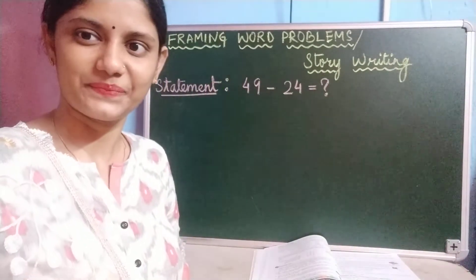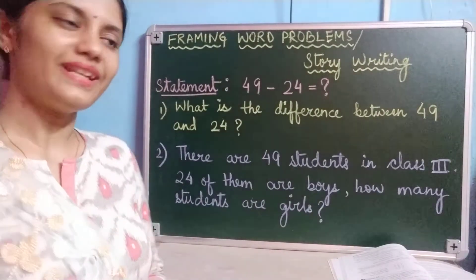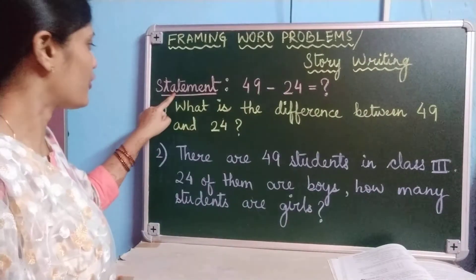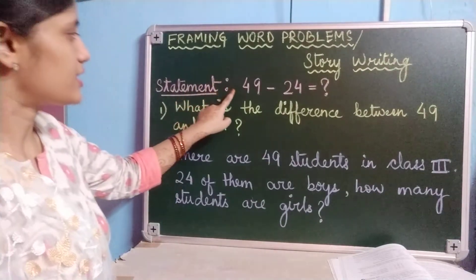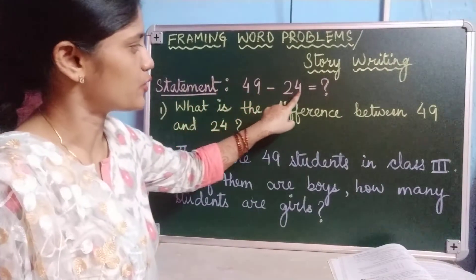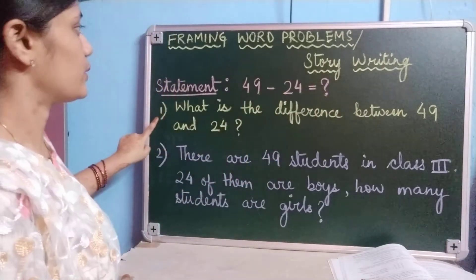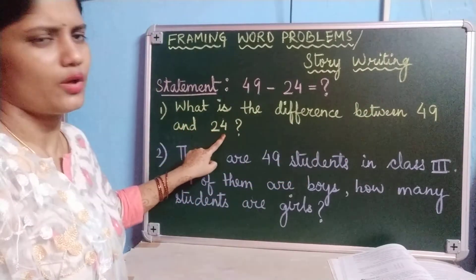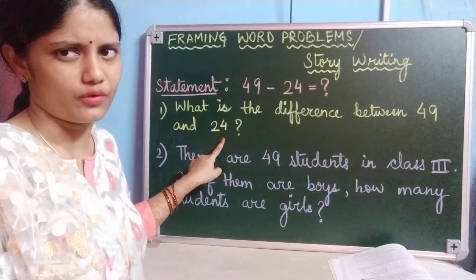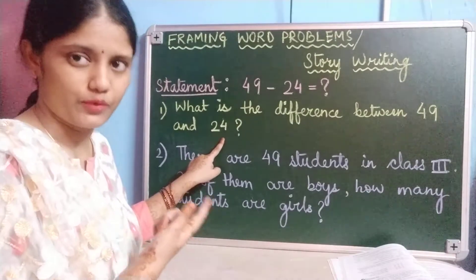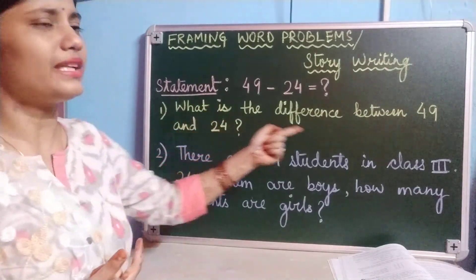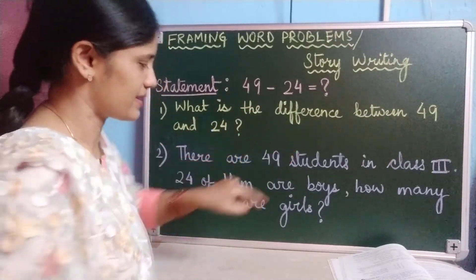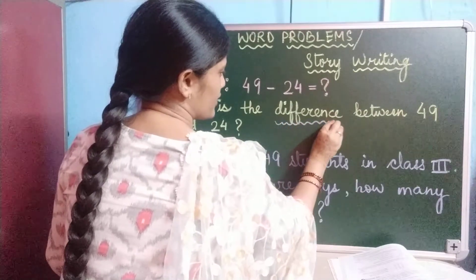So let us start. Here are the two word problems which ma'am has framed for this statement. The statement was 49 minus 24 is equal to question mark. The first word problem is: what is the difference between 49 and 24? Or we can also write: find the difference between 49 and 24. Since it is a subtraction question, difference is the keyword here — we are using the term difference to find the answer.